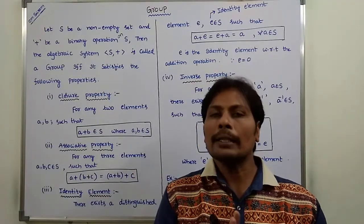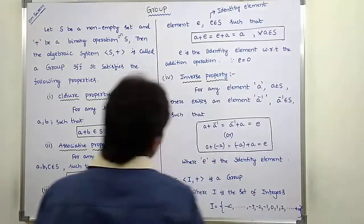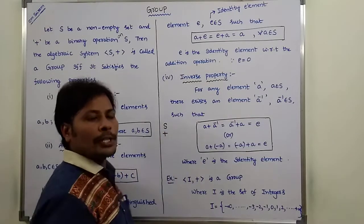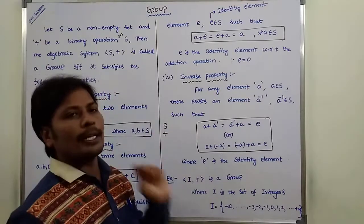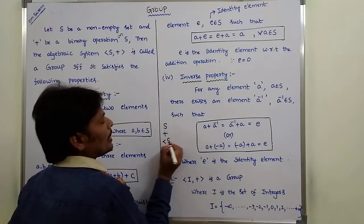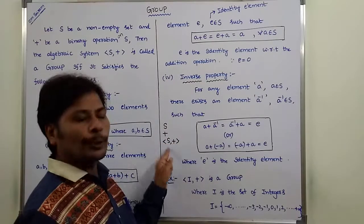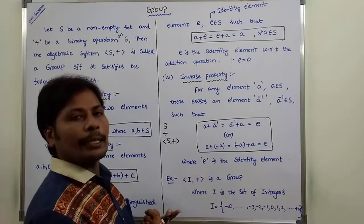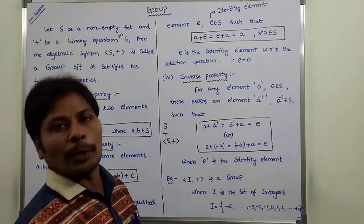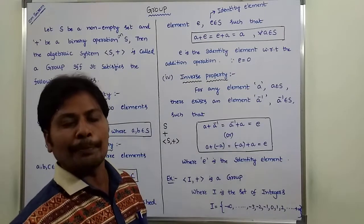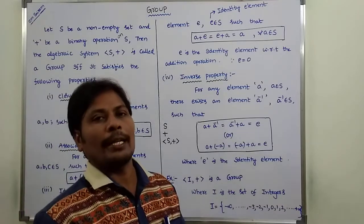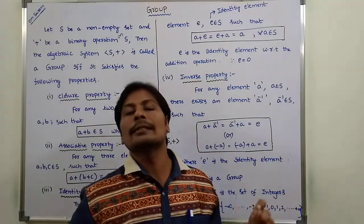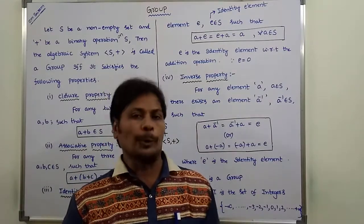What is a group? Let capital S be a non-empty set and plus be an addition operation performed on the set S. Then the algebraic system (S, +) is called a group if and only if it satisfies four properties: closure property, associative property, identity property, and inverse property. Any algebraic system satisfying these four properties is called a group.